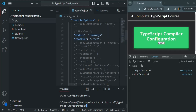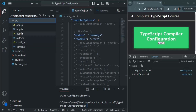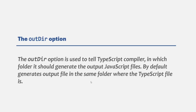Now let's talk about outdir. Currently when we compile our application, the JavaScript files are generated in the same folder where the TypeScript files are present. Using the outdir option, we can tell the TypeScript compiler in which folder it should generate the output JavaScript files. By default, it generates them in the same folder as the TypeScript files.